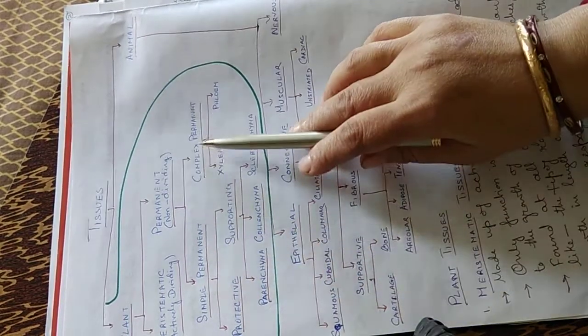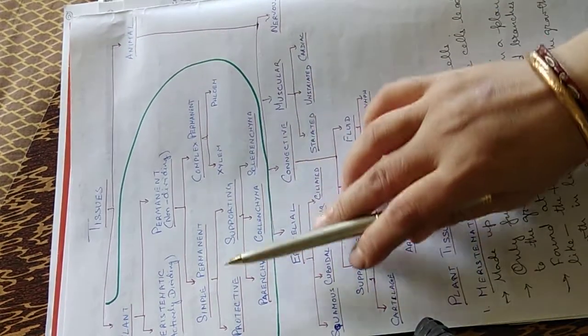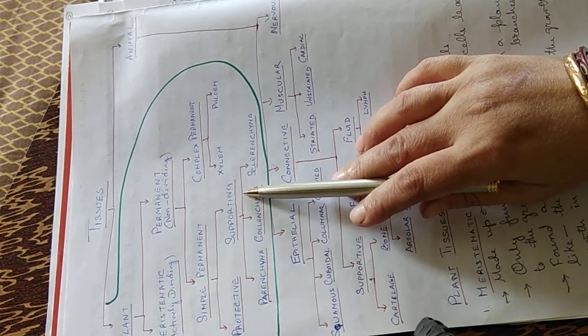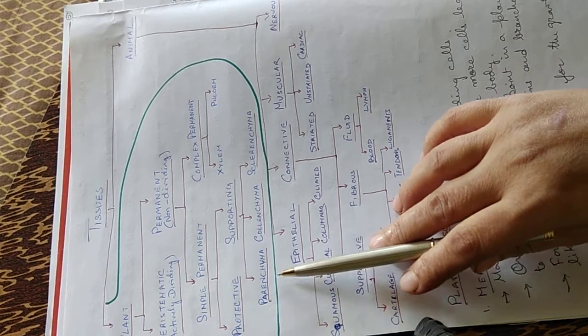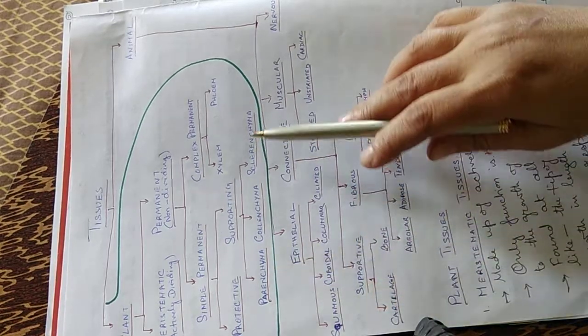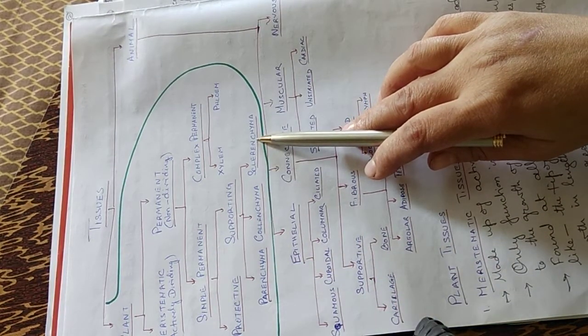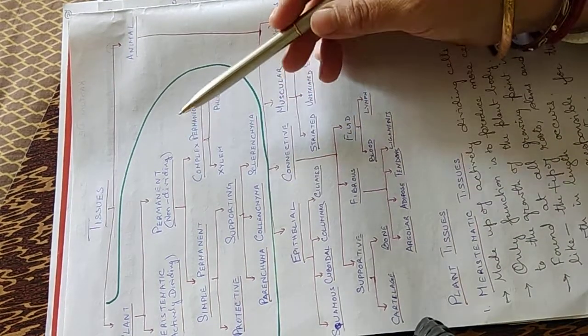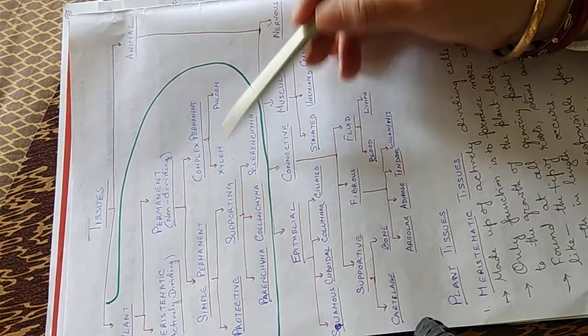Now the permanent tissues are of two types, simple permanent and complex permanent. Simple permanent are of two types: protecting and supporting. Supporting tissues are of three types: parenchyma, collenchyma, and sclerenchyma. Whereas the complex permanent tissues are of two types: xylem and phloem.